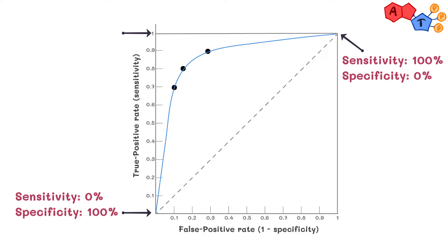The top left corner suggests a test with 100% sensitivity and 100% specificity. That is where we would ideally want every test to cross.